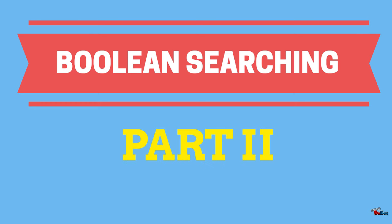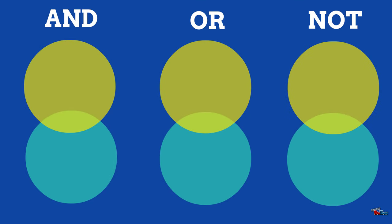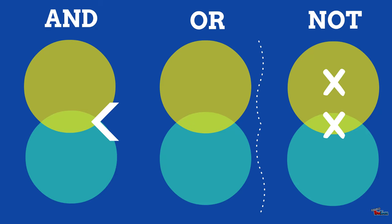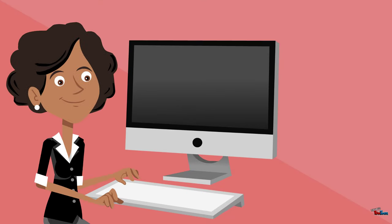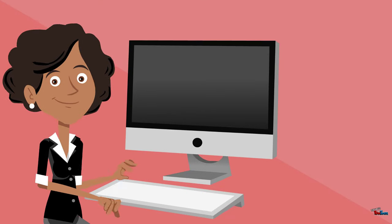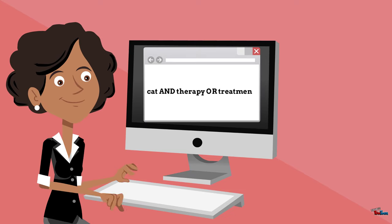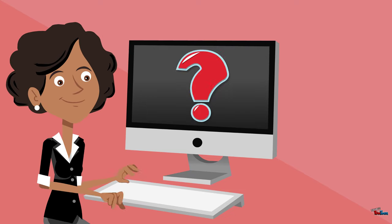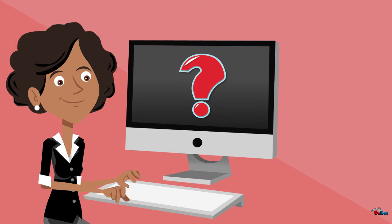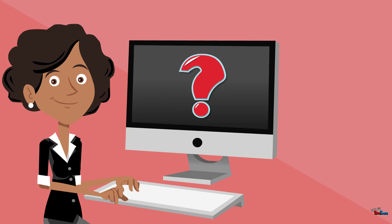Welcome to part two of McMaster Library's Boolean searching series. In part one, we established that the Boolean operators AND, OR, and NOT are effective search tools. This is a great starting point, but if we don't format our searches correctly, the search engine may still have a difficult time understanding what we are asking it to do.